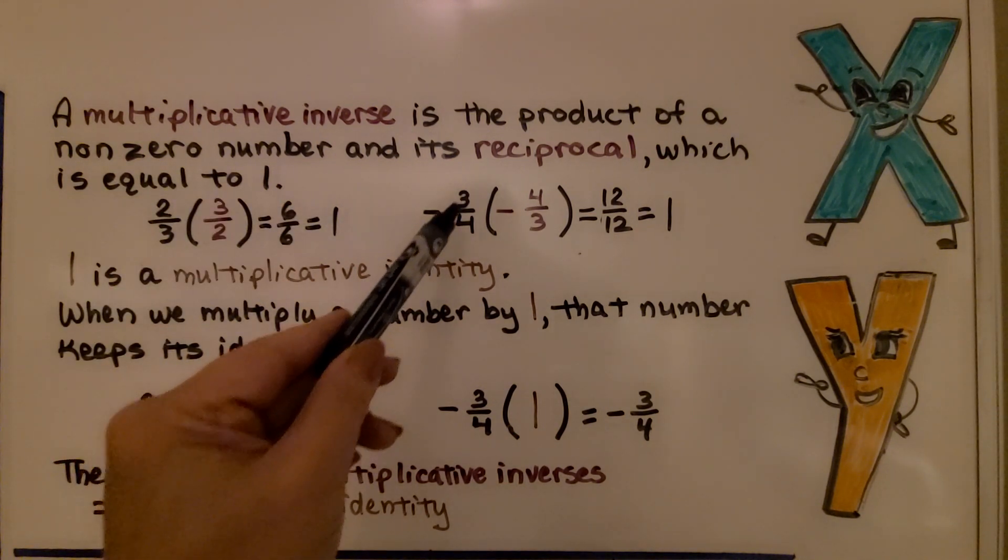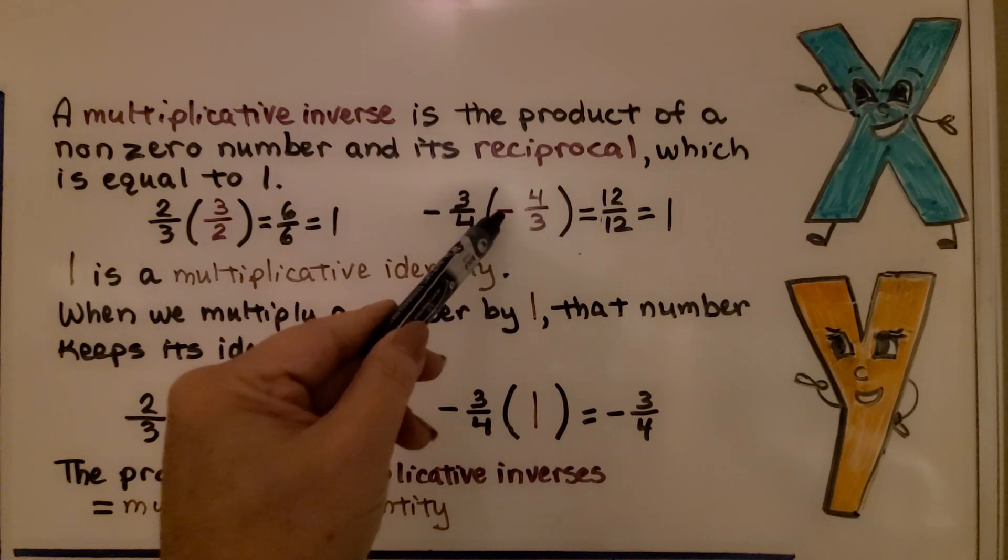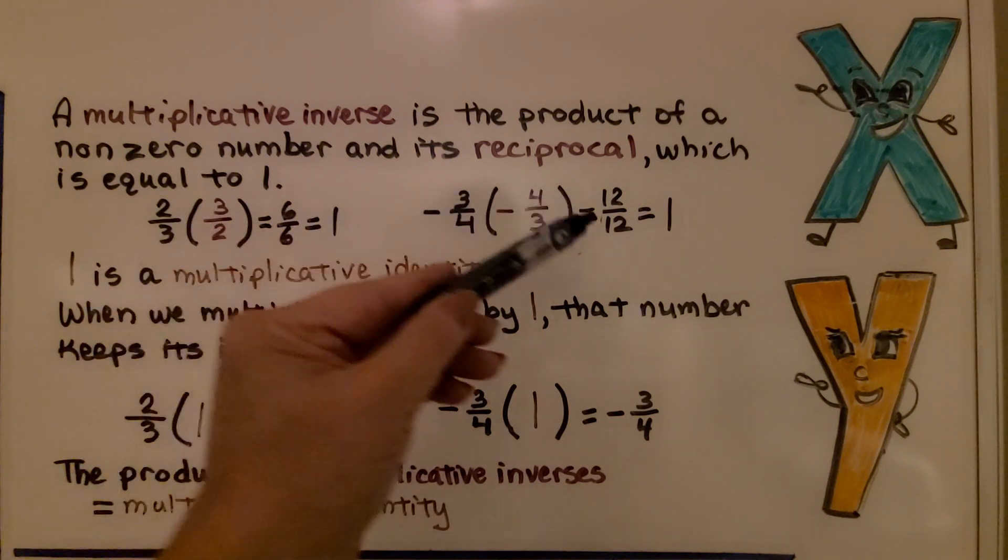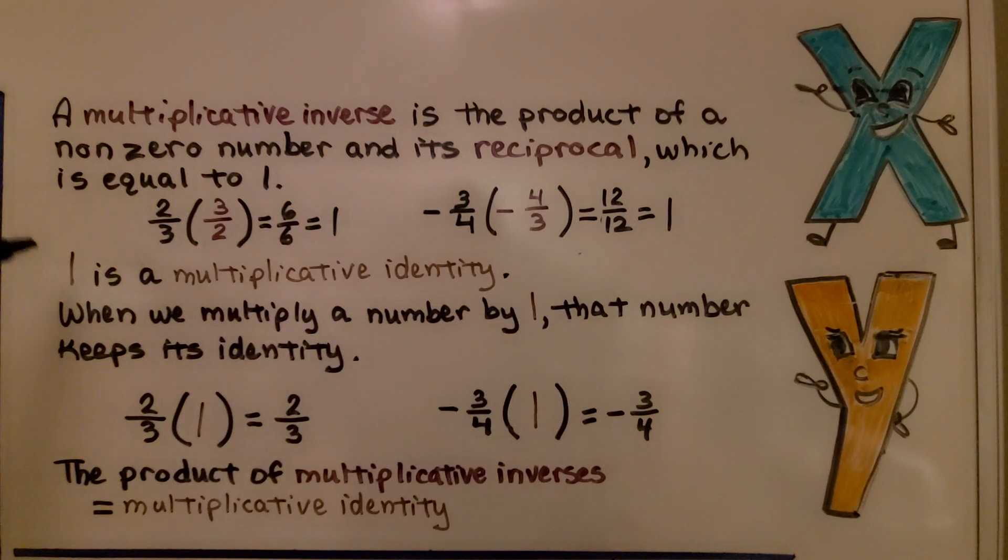If we have a negative 3 fourths multiplied by a negative 4 thirds, its reciprocal, it's flipped upside down. Notice it kept the negative sign. We have a negative times a negative, so it's going to be a positive. We have 12 twelfths, which is equal to 1. So, 1 is a multiplicative identity. When we multiply a number by 1, that number keeps its identity. If we multiply 2 thirds by 1, it's equal to 2 thirds, it kept its identity. Same with negative 3 fourths, it's going to stay and keep its identity. So, the product of multiplicative inverses is equal to the multiplicative identity, 1.